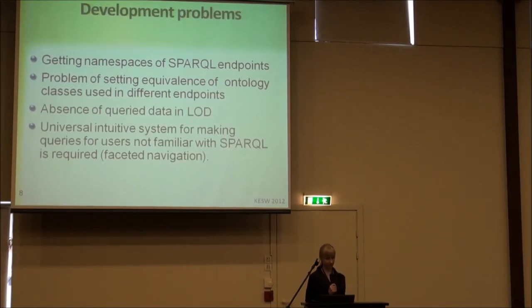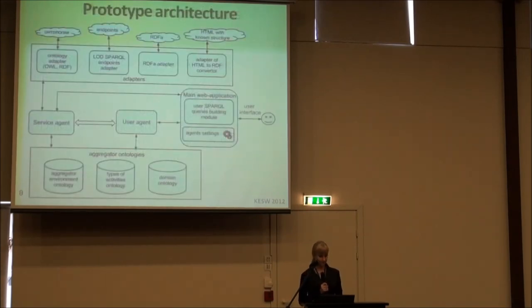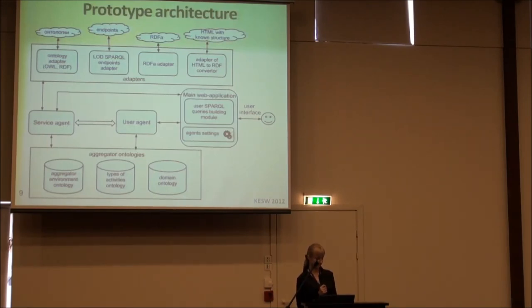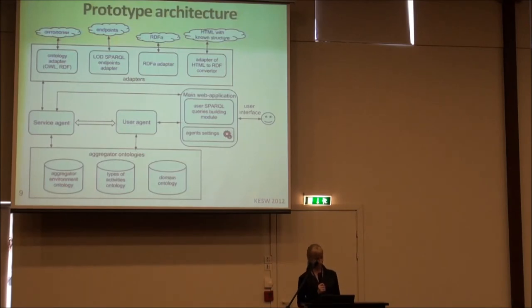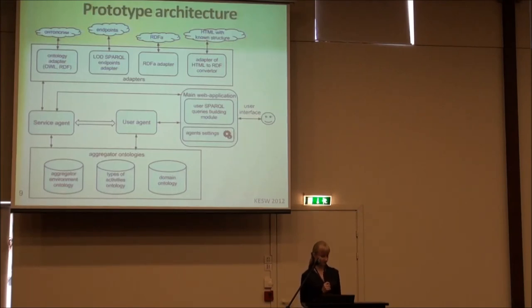There are several papers on this theme and some propose faceted search. An agent-based approach is used in the aggregator prototype architecture. Two types of agents are employed: user agent and service agent. Once in a specified period of time — for example, once a day — the service agent aggregates data from users' sources and saves it to users' ontologies. When a user visits the page, the client agent gets the user's available data from their ontologies. Considering the date of the user's last visit, new data will be marked as unread for that user.